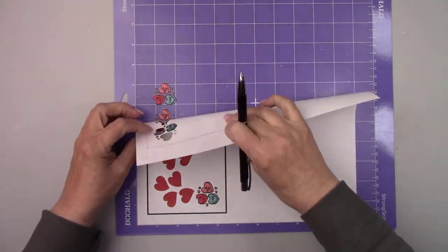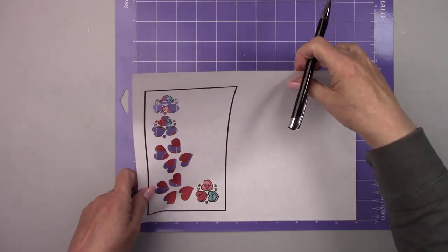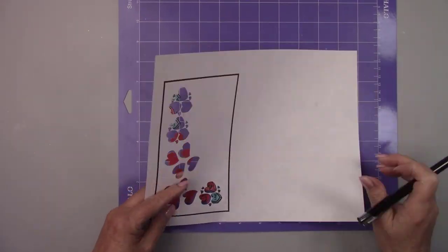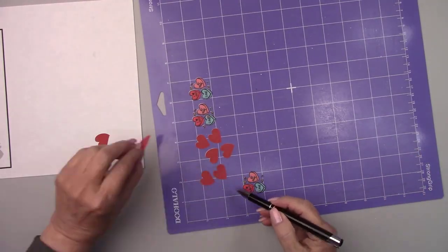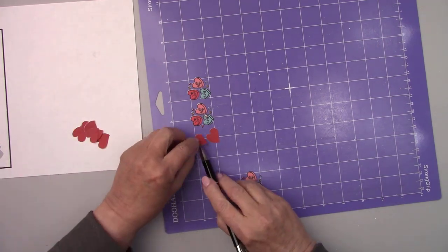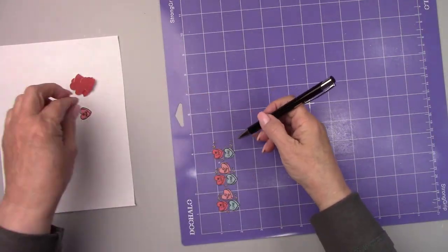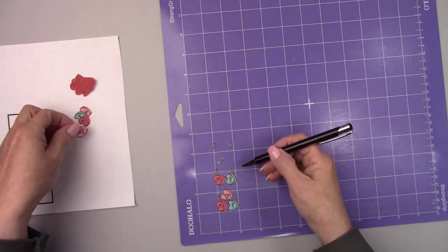Now I know not everyone has a Cricut machine. If you'd like to duplicate exactly what I'm doing, I'm going to start offering the Cricut cut items in my Etsy shop. I'll print them, seal them, and cut them all out for you. All you have to do is go into my Etsy shop and look for the section that is labeled tutorial packages.